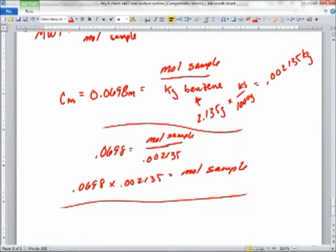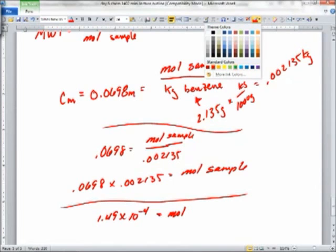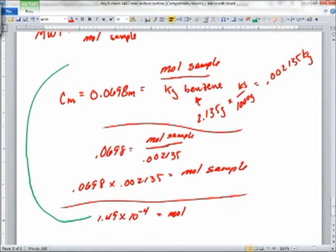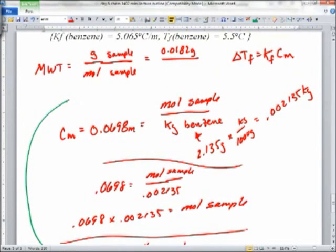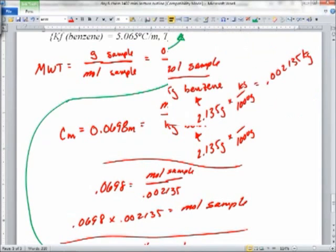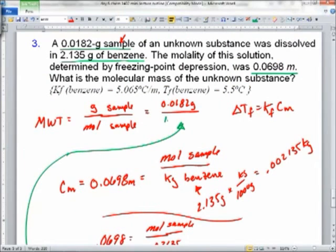What did you get? Let me write down what you got. Yeah, 1.49 what? 10 to the negative 4. Okay. Now we can plug that number all the way back in up here. And we should get our molar mass. All right. 1.49 times 10 to the negative 4. And what did you get? Anybody get an answer? About 122?